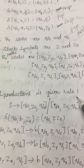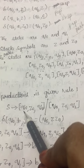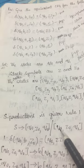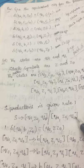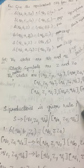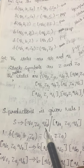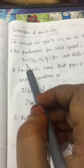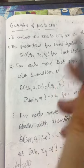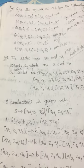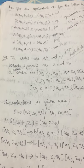The S production is given in rule 1. S produces Q₀ Z₀ Q₀ | Q₀ Z₀ Q₁. That is: S produces Q₀ Z₀ Q₀ and Q₀ Z₀ Q₁. This is the start production we have written. Now we are going to consider each and every transition rule.